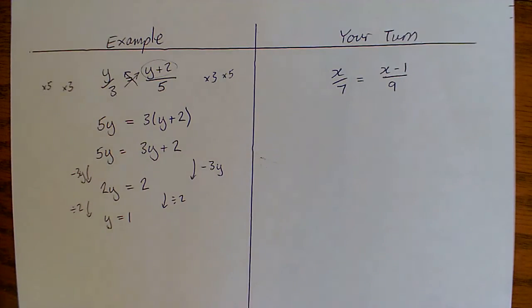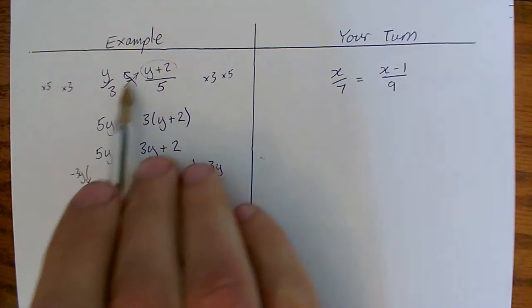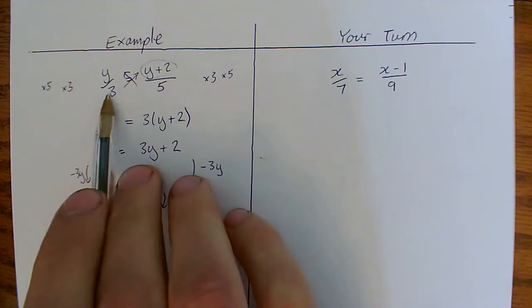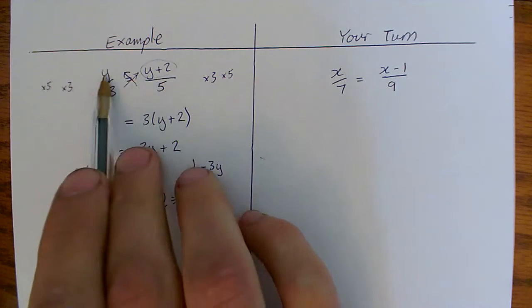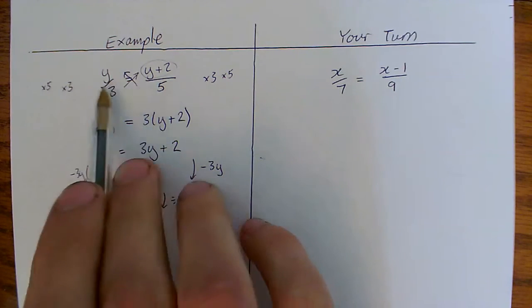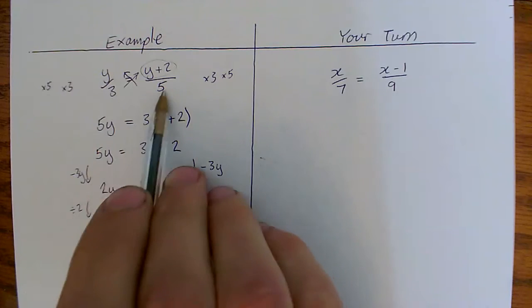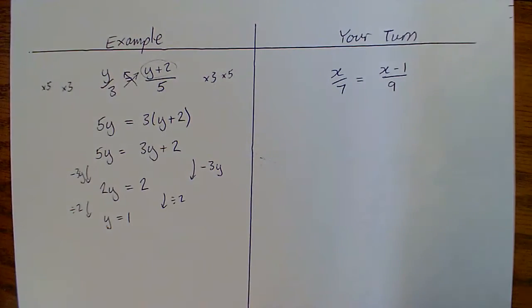So that's your first example, this idea of cross multiplying. So this y plus 2 gets times by the 3. This y gets times by the 5. And by doing that, we get rid of the fractions on both sides. Have a go at this, and then I'll run through the answer in just a moment.